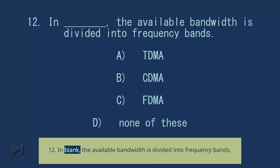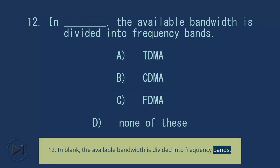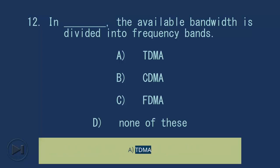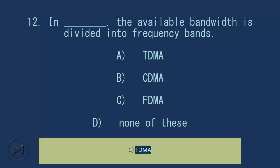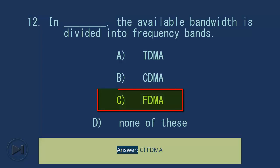Question 12: In blank, the available bandwidth is divided into frequency bands. A) TDMA, B) CDMA, C) FDMA, D) None of these. Answer: C) FDMA.